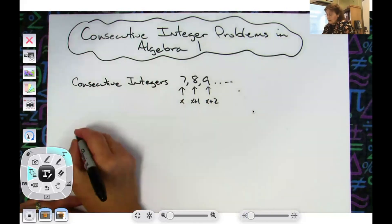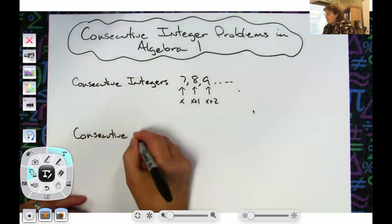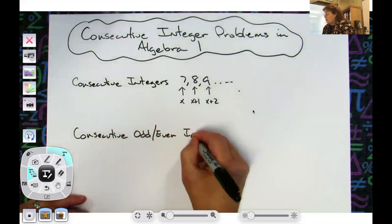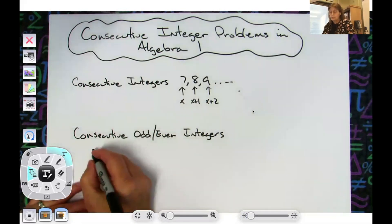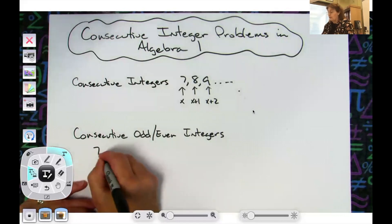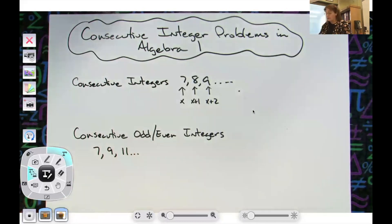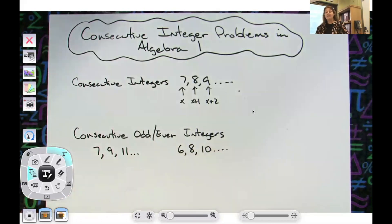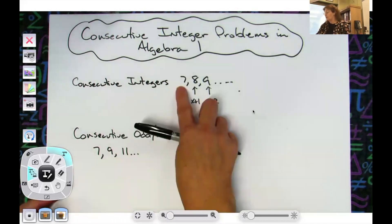Now consecutive odd or even integers — algebraically this looks the same way, it doesn't make any difference. Consecutive odd integers would look like 7, 9, 11. If I did 6, 8, 10, those would be consecutive even integers. The question is: how far apart are each of these numbers versus the consecutive integers?